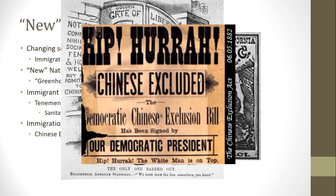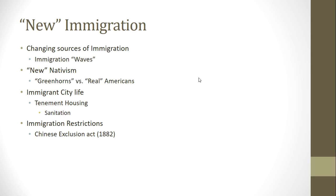One of the interesting things is that there were a few exceptions for getting around the Chinese Exclusion Act — mostly taking jobs that white people didn't want to take. If you were willing to open a laundromat or open a restaurant, you were generally allowed in despite the Chinese Exclusion Act. One of the reasons that Chinese food is so ubiquitous in the United States is because one of the ways that Chinese people could get around harsh immigration restrictions was opening restaurants. They took Chinese cooking techniques, foods, and flavors and adapted them to American tastes to give us the Chinese-American food that we know today — I'm not going to say that's a benefit of the Chinese Exclusion Act, just an effect of it.